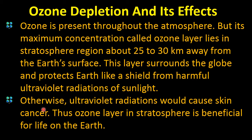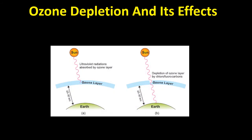If the ozone layer were not present, ultraviolet radiations would reach us directly with no shield between us and the sun, and they would cause skin cancer. Thus, the ozone layer in the stratosphere is beneficial for life on Earth. You can visualize this: the sun emits ultraviolet rays moving toward Earth, but the ozone layer acts as a shield so these harmful radiations do not directly reach Earth.